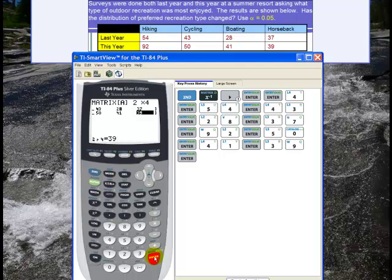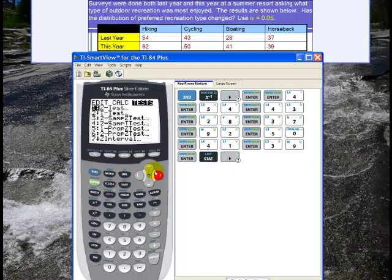Okay now that I have the data stored in the matrix I go to stat and then tests and then I scroll up to chi-squared test. On my calculator it's C. And then hit enter.